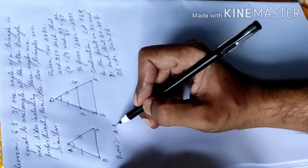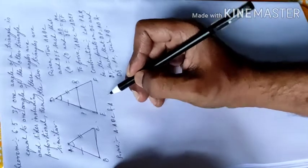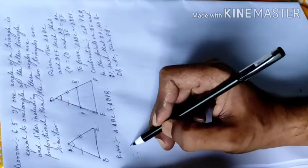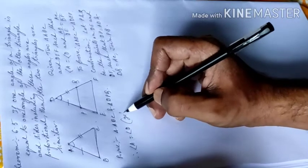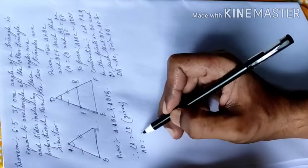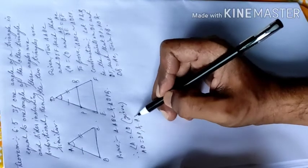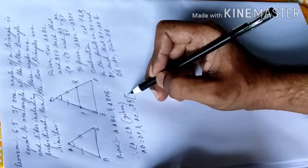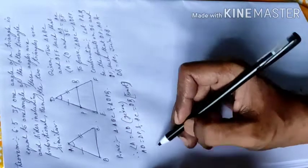in triangle ABC and in triangle DPQ, angle A is equal to angle D (given), AB is equal to DP and AC is equal to DQ (according to construction),